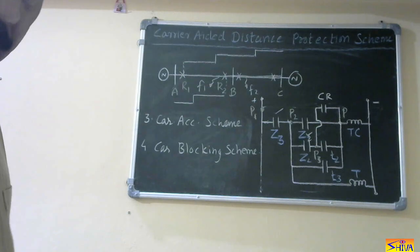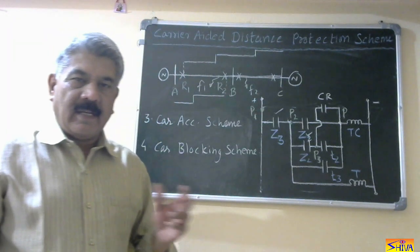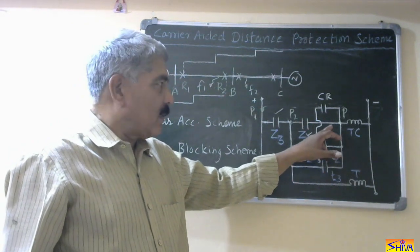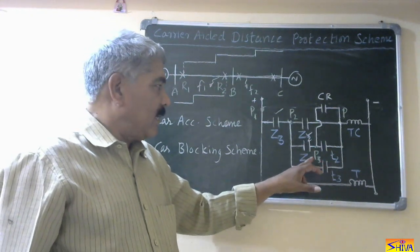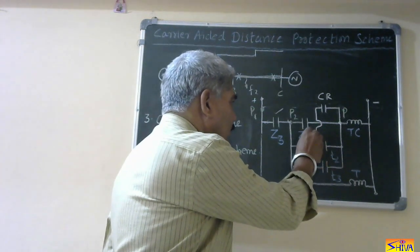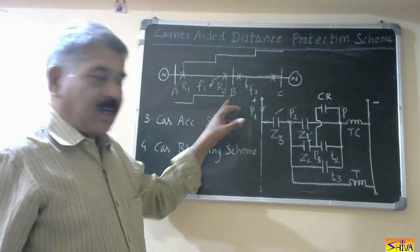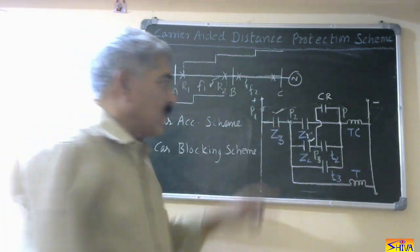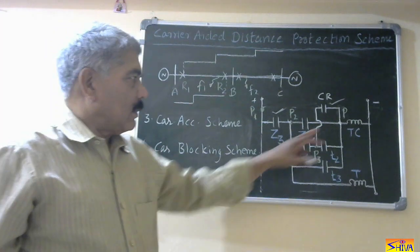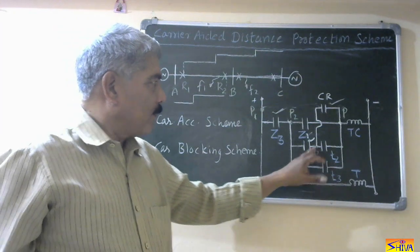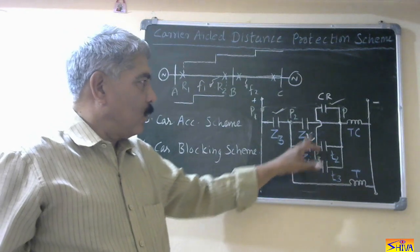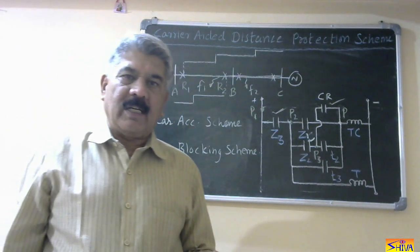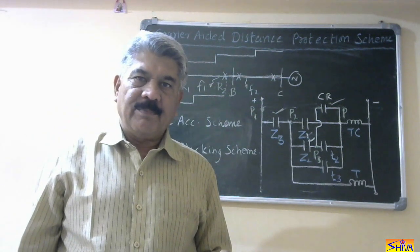Now let us see the third scheme — carrier acceleration scheme. In this scheme, the position of the carrier receive relay contact is changed from P2 to P3 — that is, after the Z2 contact. When fault F1 occurs, Z3 will close, Z2 will close, carrier signals are transmitted, and as soon as the carrier receive relay receives the signal it closes its contact. The trip coil is energized through Z3, Z2, and CR. Advantages are the same: circuit breakers at both ends operate simultaneously, fast fault clearing, and improved transient stability.